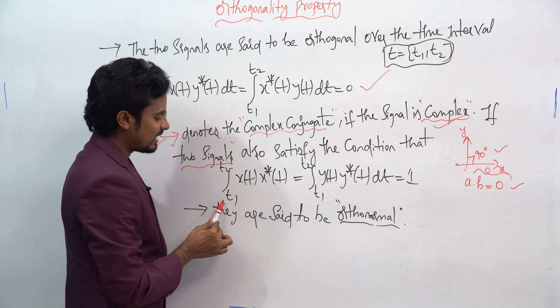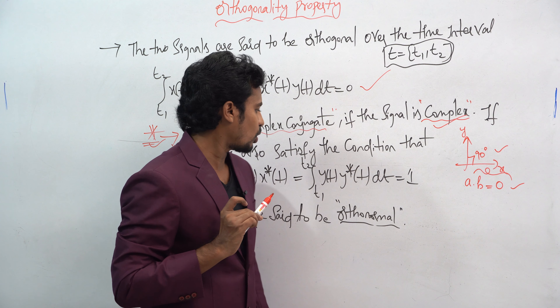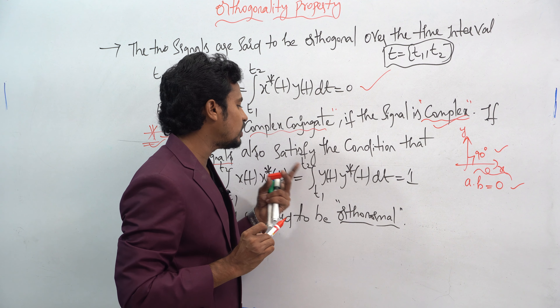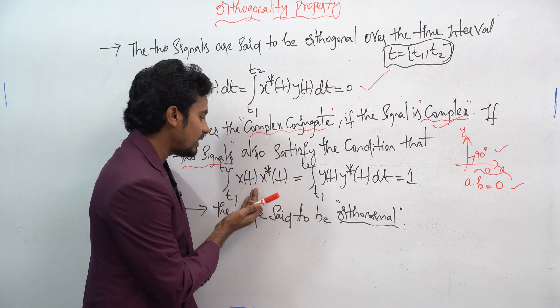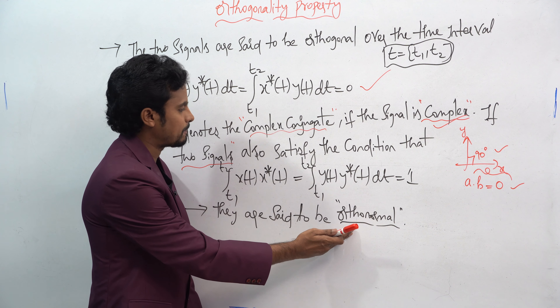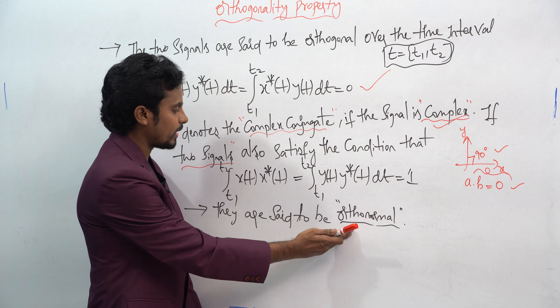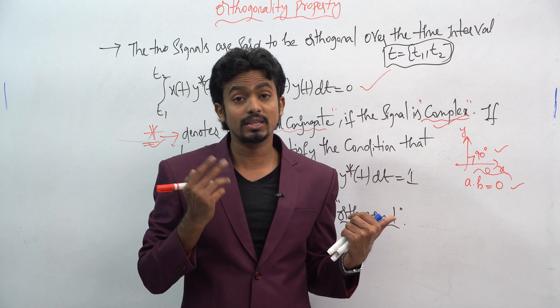The star symbol represents the complex conjugate. So whenever the signal is complex — not real — you must apply this formula. If two signals also satisfy the condition that the integration from t1 to t2 of x(t) into x-star of t equals 1, and similarly the integration from t1 to t2 of y(t) into y-star of t equals 1, then that type of signal is said to be orthonormal.